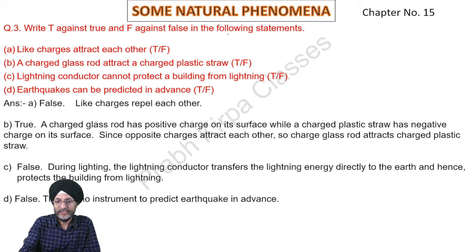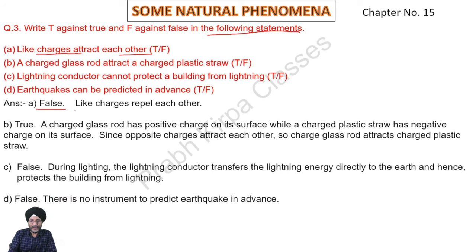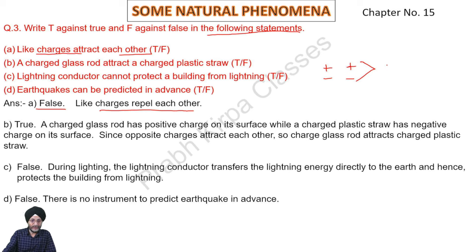Now we have to find true and false for the following statements. Statement: Like charges attract each other. Answer: False. Like charges repel each other. If we have two positive charges or two negative charges, they will repel each other. However, if there is one positive charge body and another negative charge body, there will be attraction between the two bodies.